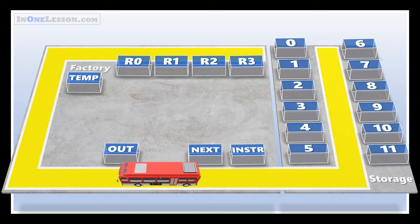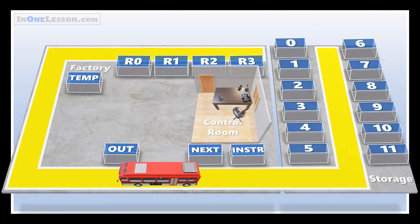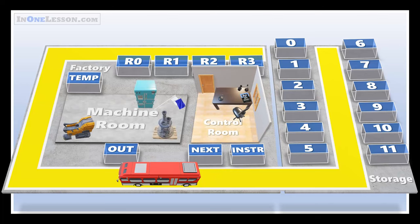A bus can travel between the buildings and move the contents of any container into any other. Inside the factory, there is a control room where the boss works and a machine room where all the work gets done.